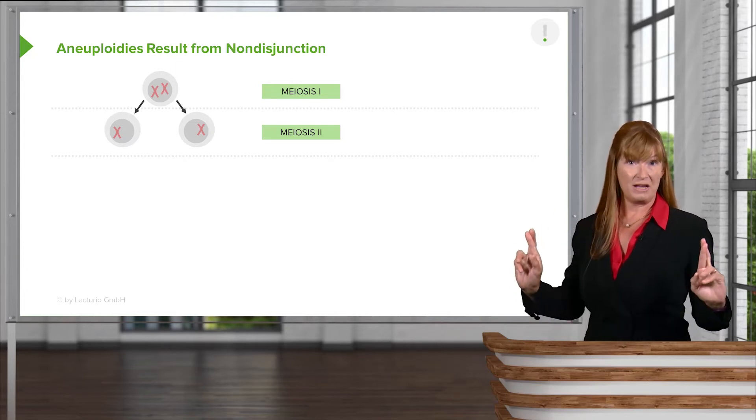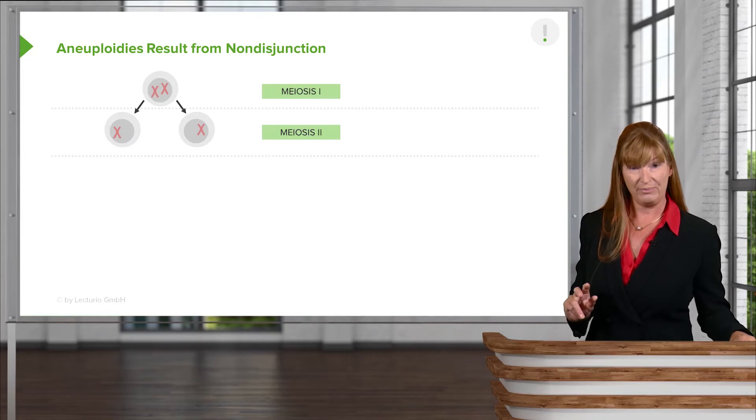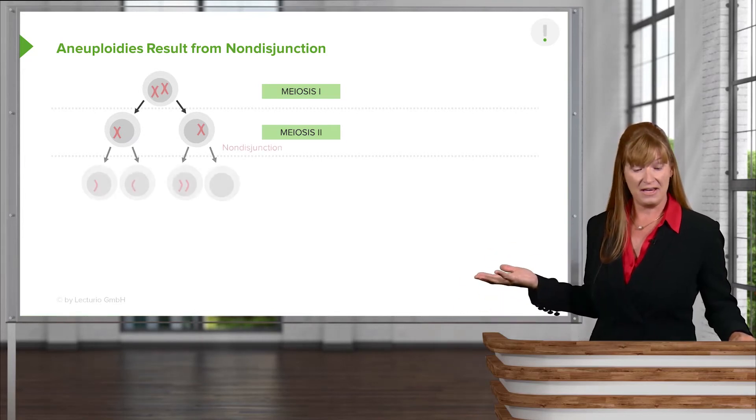And that homologous pair separates during meiosis I. At least they should. In this case, they do separate.